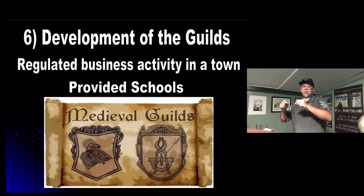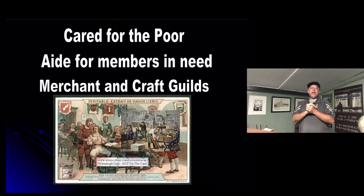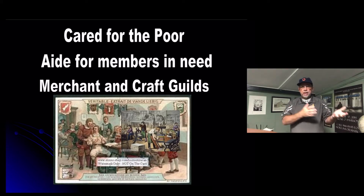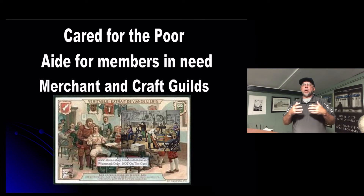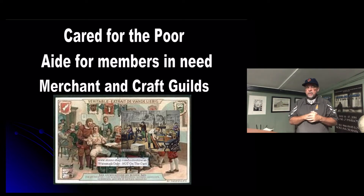The schools the guilds provided were basically for the children whose parents or fathers were part of the guild. They also did several other things — they cared for the poor. They had a benevolence fund that members gave to, so that if someone in the guild had an emergency, an accident, or couldn't conduct their trade due to sickness or injury, they would be able to provide for that family until they could get back on their feet.